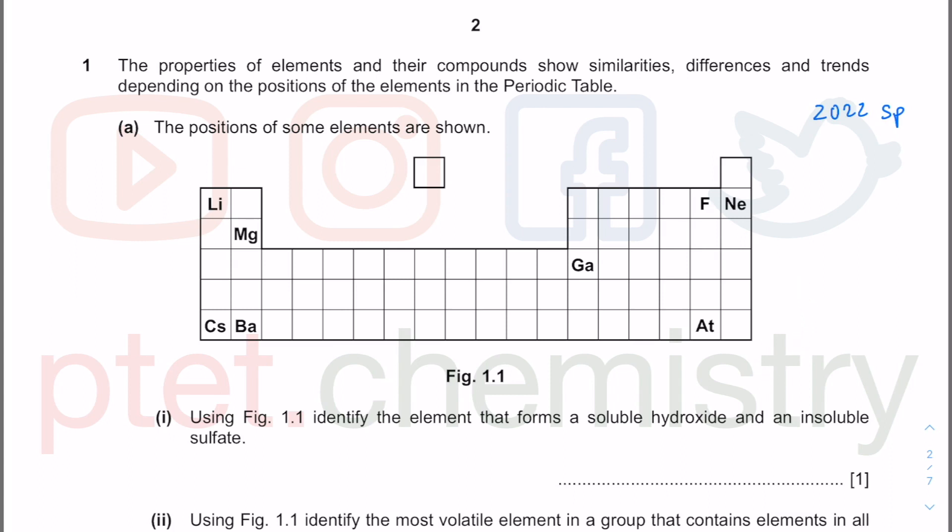So this is a section of the periodic table. We know that this is group 1, group 2, group 13, 14, 15, 16, 17, and 18. And what we're trying to do here, we need to identify the element that forms a soluble hydroxide and also insoluble sulfate.